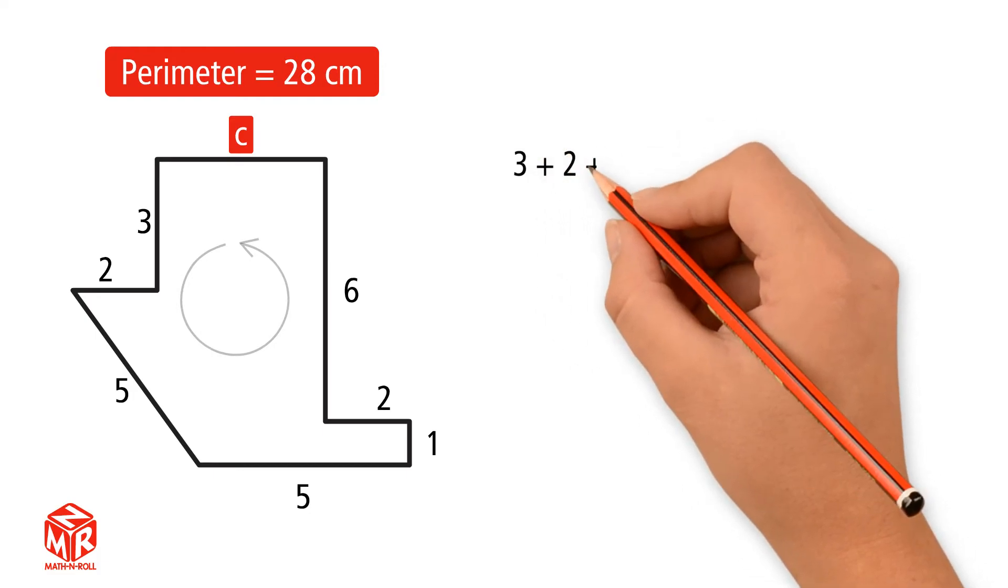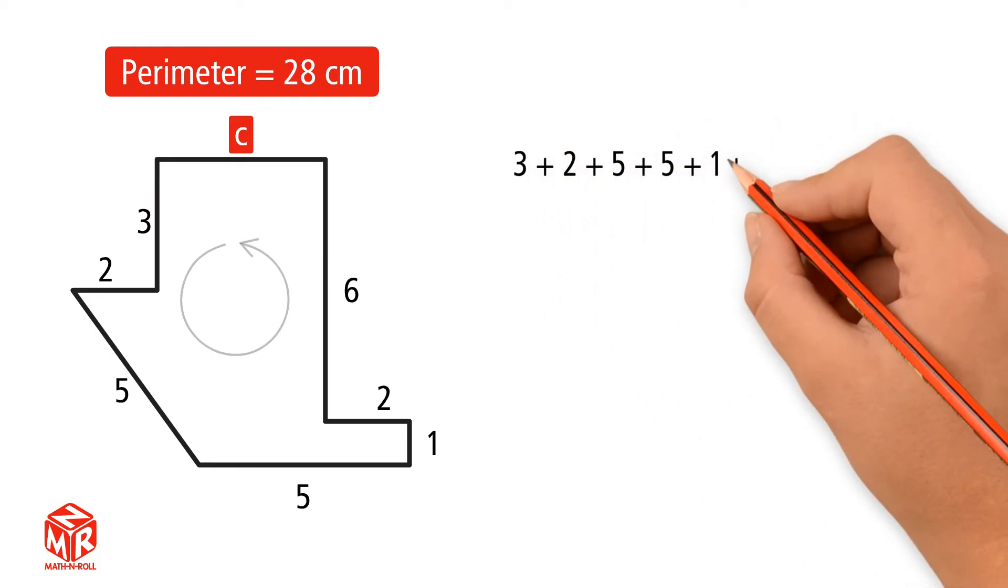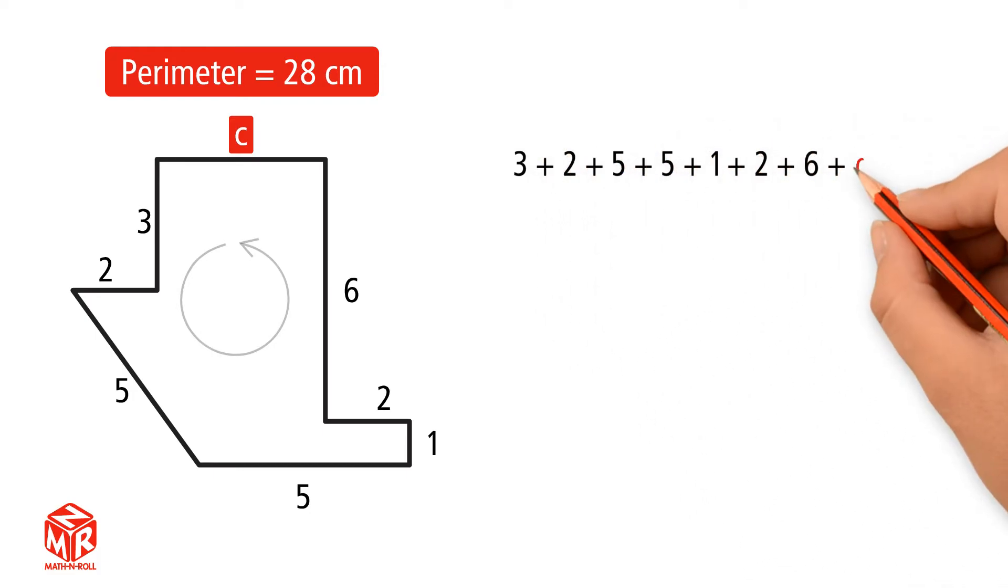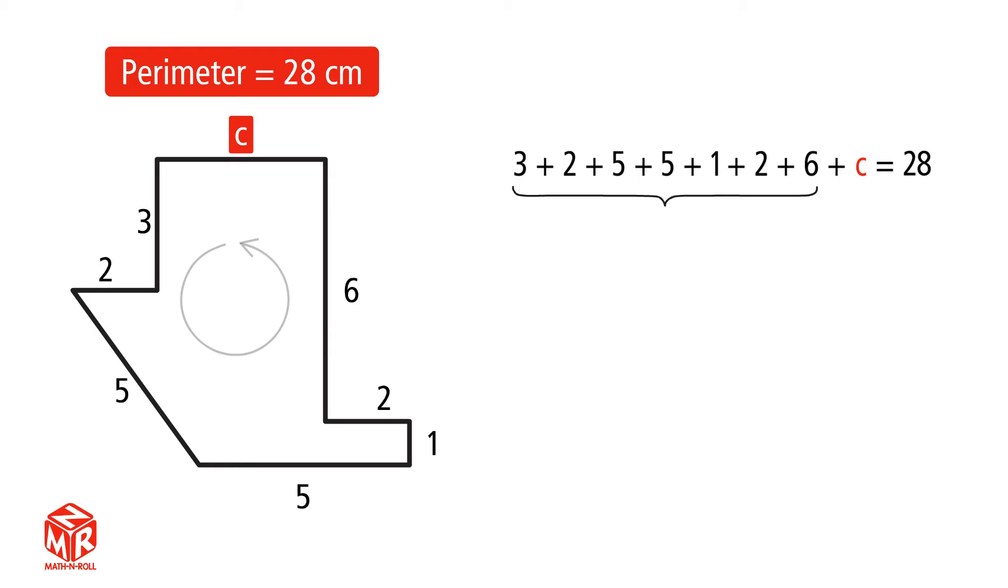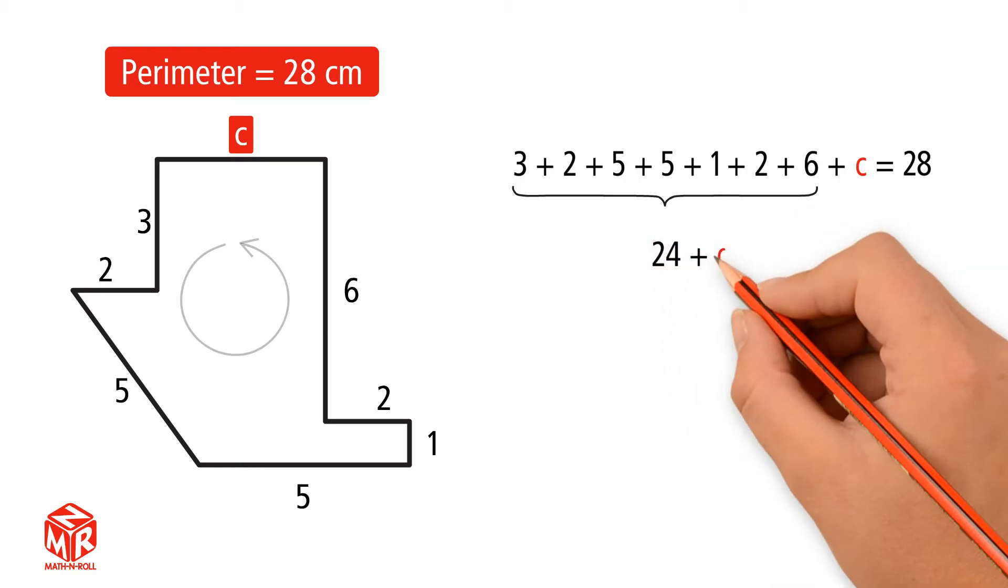3 plus 2 plus 5 plus 5 plus 1 plus 2 plus 6 plus C equals 28. Add the lengths of the known sides. We get 24 plus C equals 28.